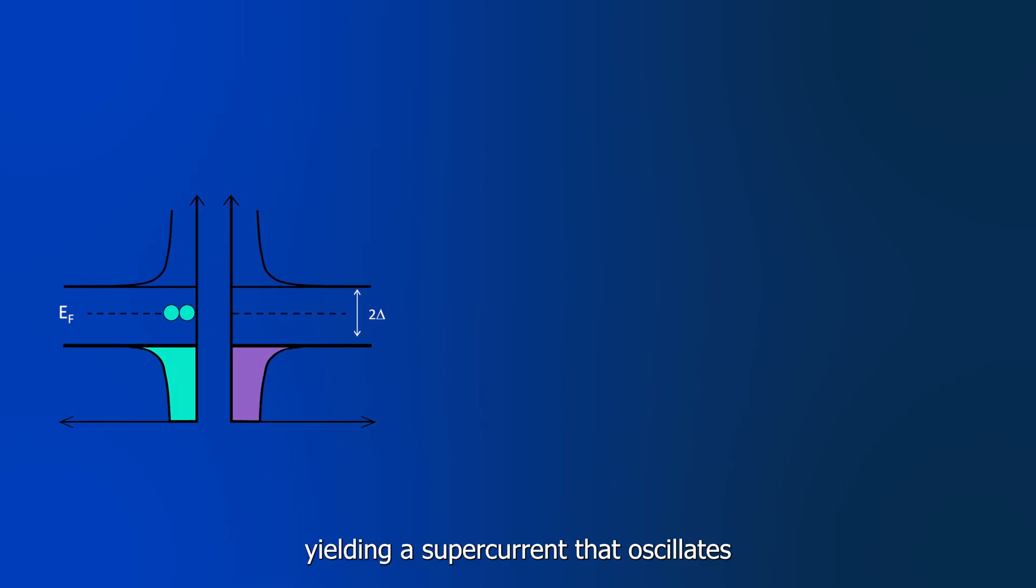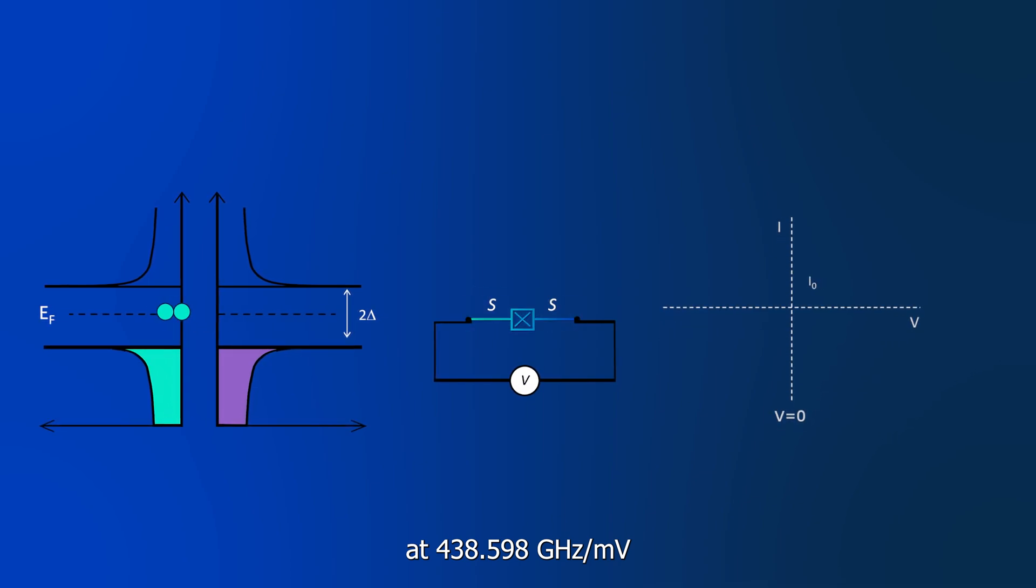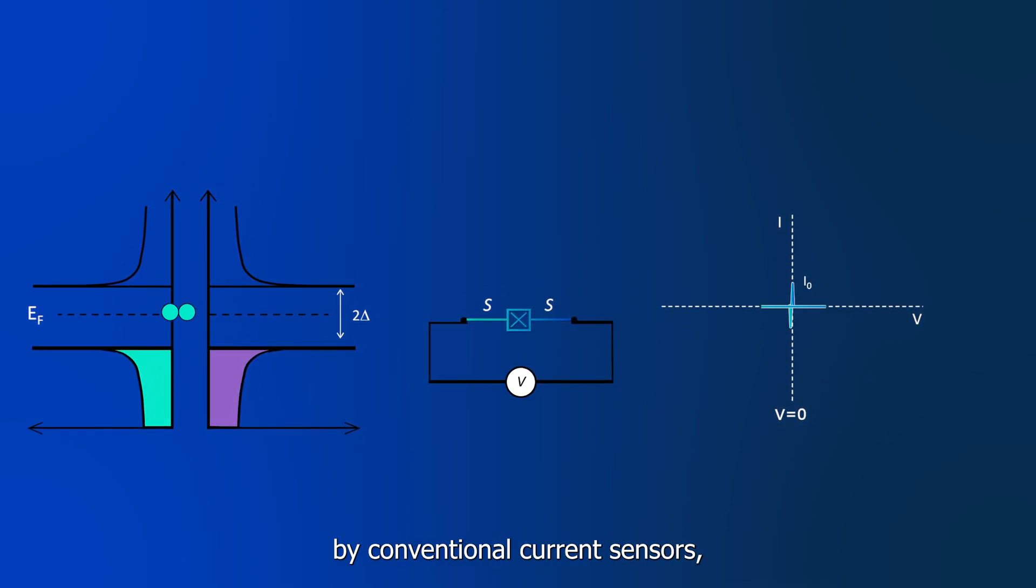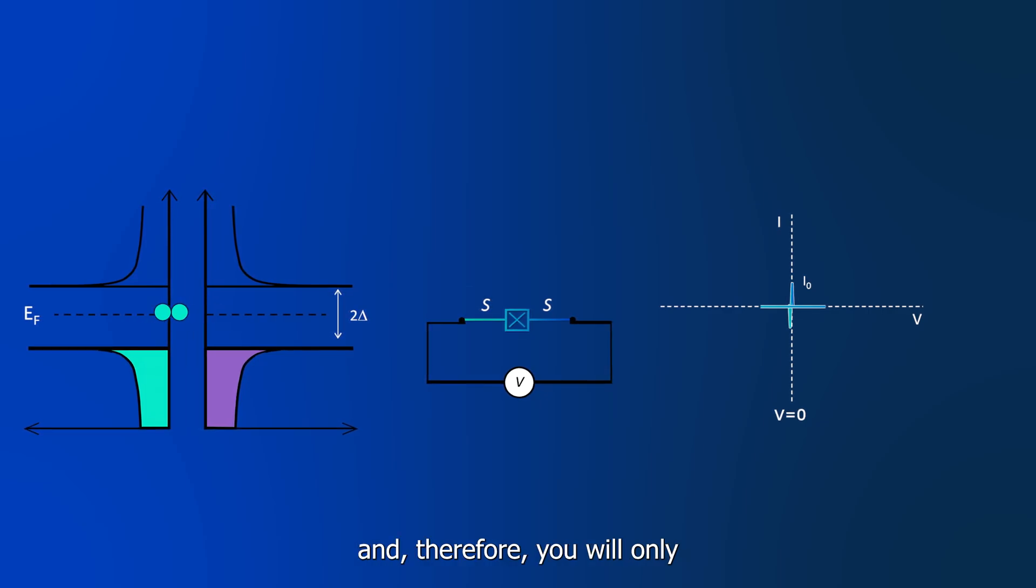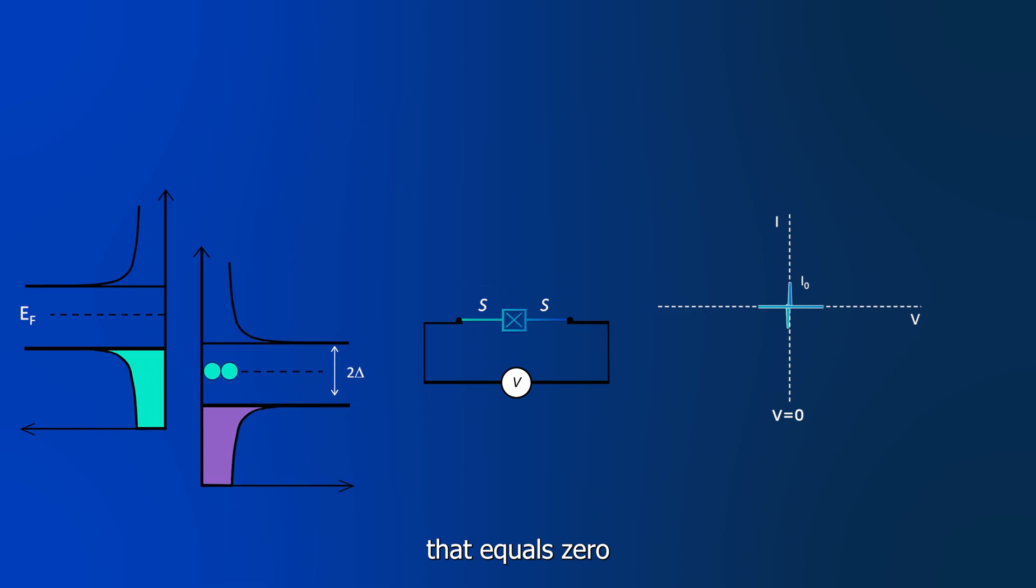Such high-frequency current is normally not measurable by conventional current sensors, and therefore you will only observe its time average that equals zero.